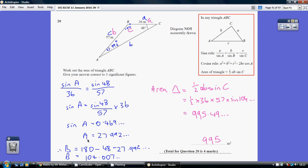Working that through, I get angle A being 27.992, and therefore angle B, given angles in a triangle add up to 180, is going to be 104.007.